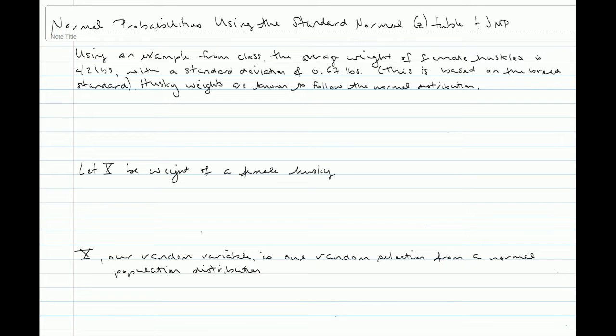Today we're going to do normal probabilities using the standard normal or Z table and JMP. We're going to do this using an example that's already in the class notes. In that example, we're told that the average weight of female Huskies is 42 pounds with a standard deviation of 0.67 pounds, based on the breed standard.